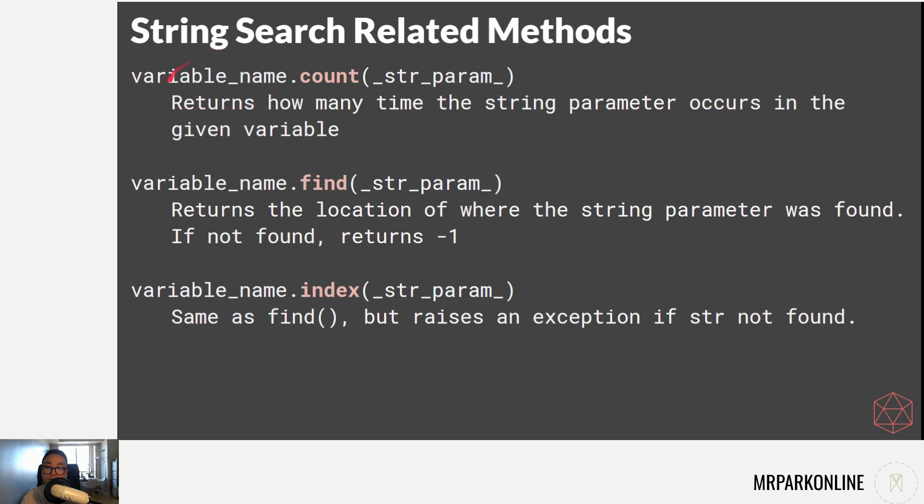For methods, these are like functions but they belong to an object. We'll have a string variable, and since it's a string data type, we use a period to access a method it has and give it whatever arguments it needs. Count will count how many times an argument exists inside the string and return a value. Find will look for a certain string argument inside the string. If found, it gives us the index. If not found, it returns negative one. That's a big difference between find and index - index will crash if the argument is not found, whereas find will just return negative one.